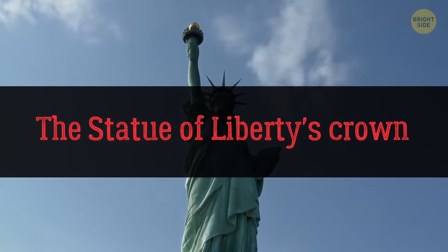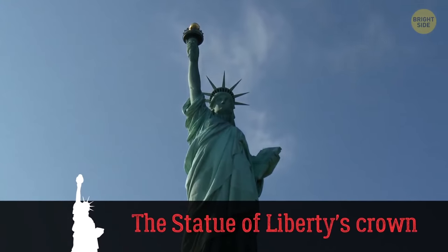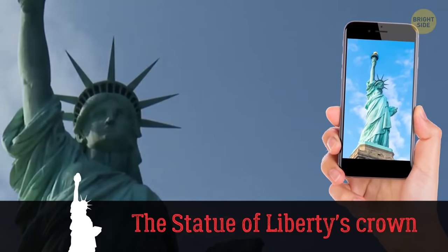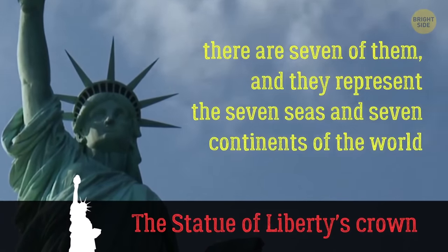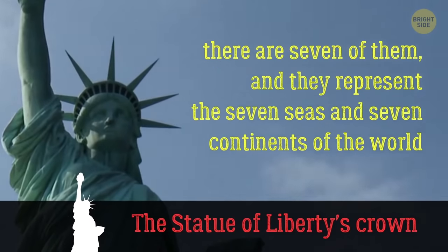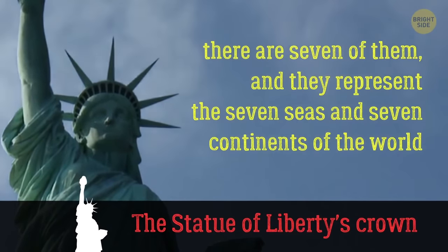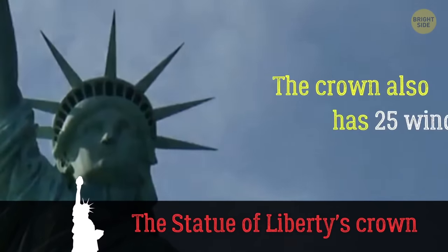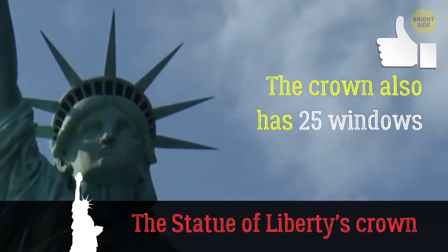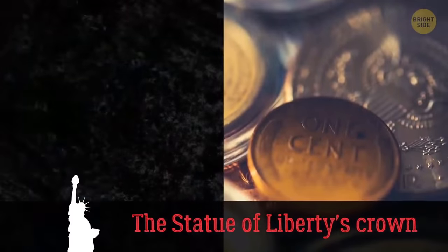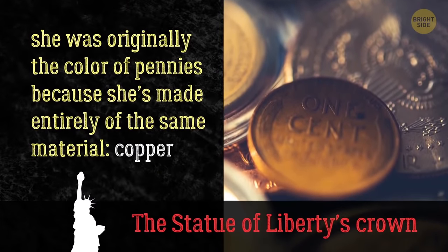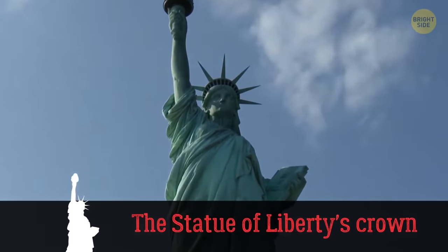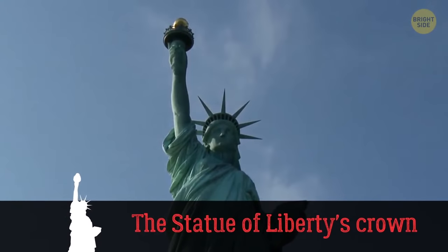I'm sure you're familiar with Lady Liberty, whether you've seen her in person or in a picture. But have you ever noticed how many spikes are in her crown? And do you know what they represent? Well, there are 7 of them, and they represent the 7 seas and 7 continents of the world, showing that freedom and liberty are universal concepts that should be shared across the world. And that crown of hers is a pretty heavy weight to bear. Each spike weighs 150 pounds. The crown also has 25 windows, showing a great view. I know, I've been up there myself. Now, here's another cool fact. She was originally the color of pennies, because she's made entirely of the same material, copper. Over time, the copper oxidized, and she turned that bluish-green patina color that we know her today. Can you imagine a reddish-brown colored Statue of Liberty? Weird.